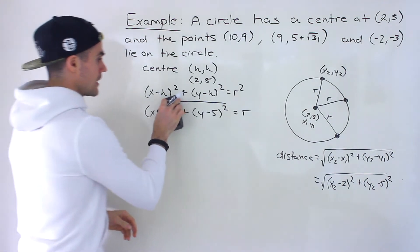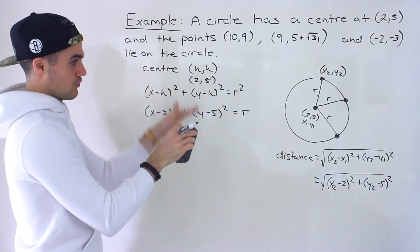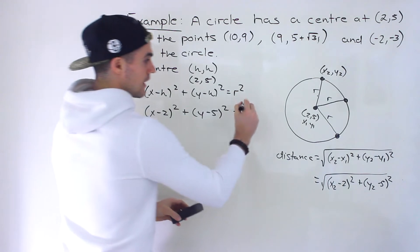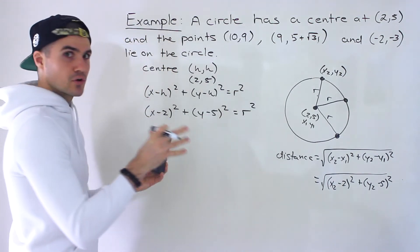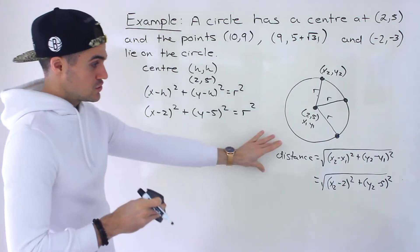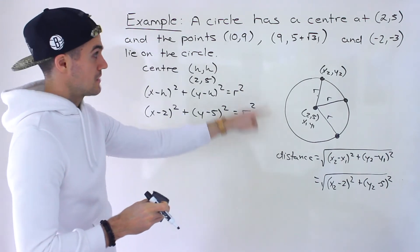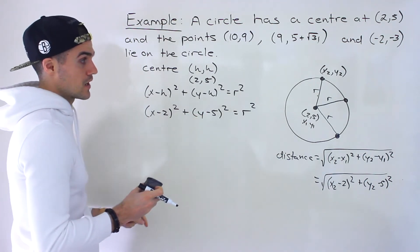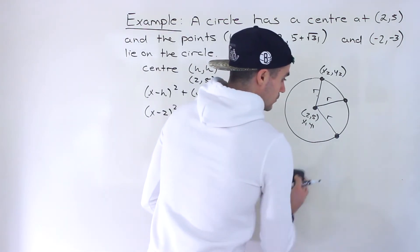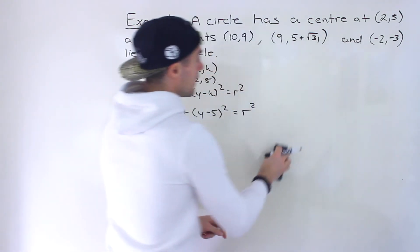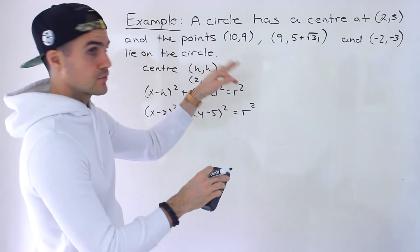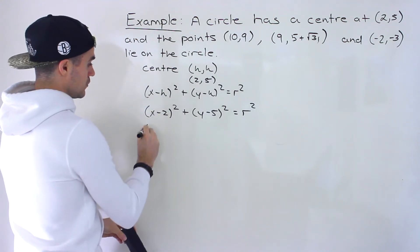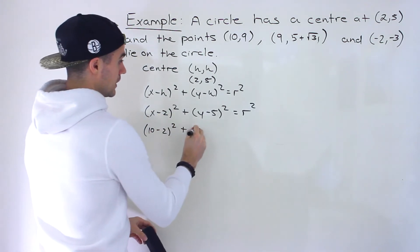I wanted to clarify this so you wouldn't be confused if your teacher uses this method versus the distance formula — they produce the same radius. If your teacher uses the equation-of-a-circle method, feel free to use it and you'll get the same answer. Now let's verify all three points have the same radius from the center. We'll plug in the first point: x = 10, y = 9.